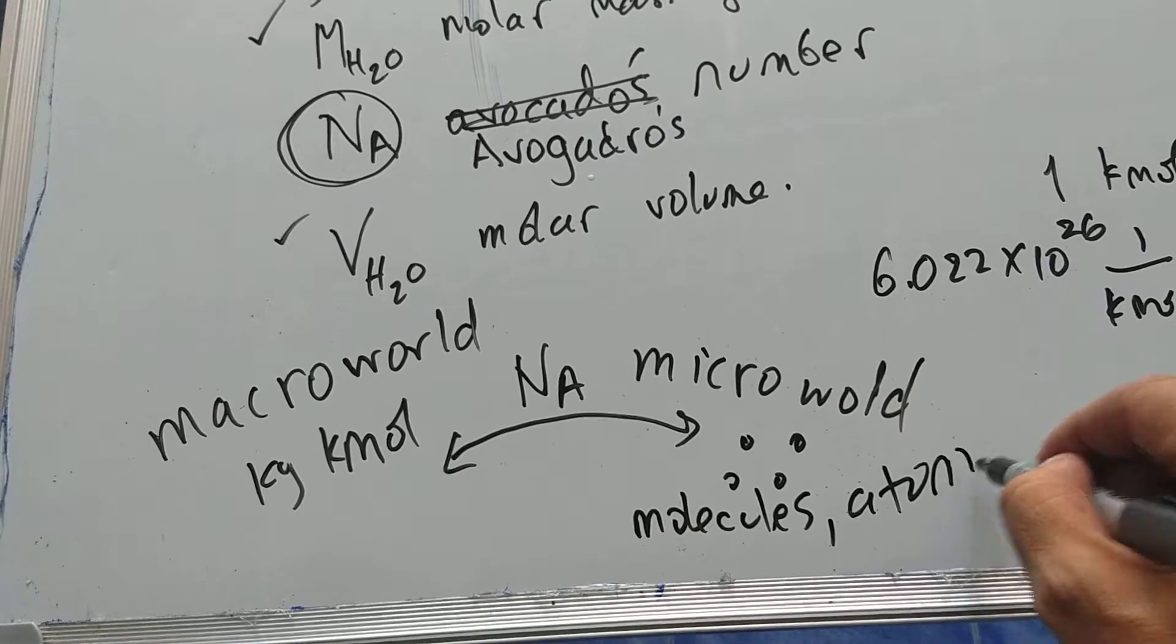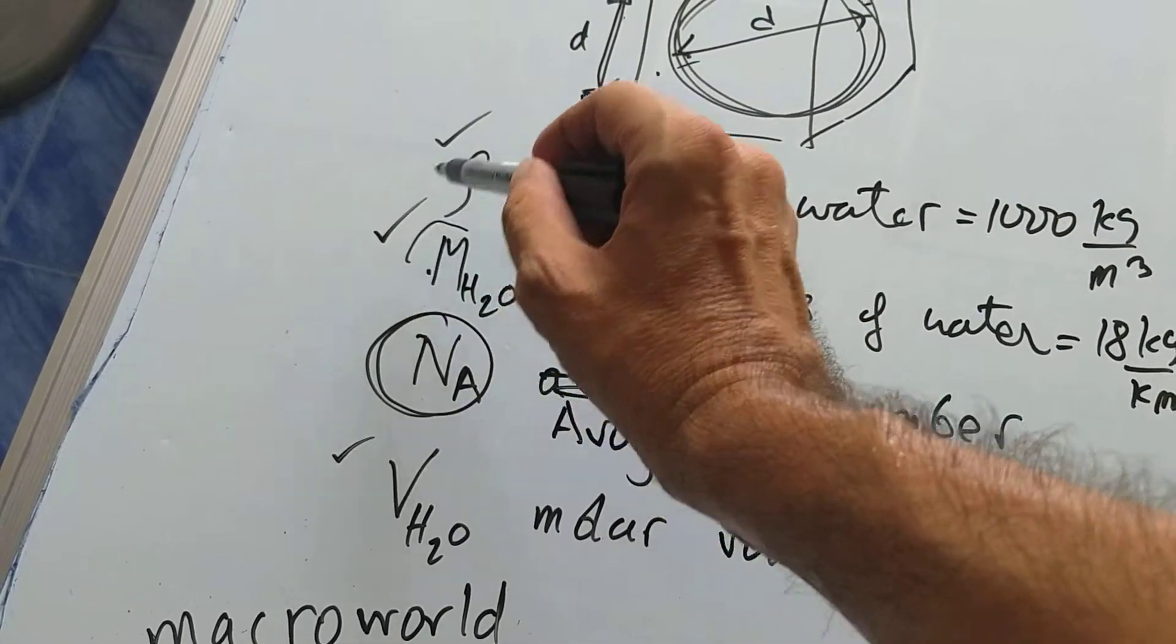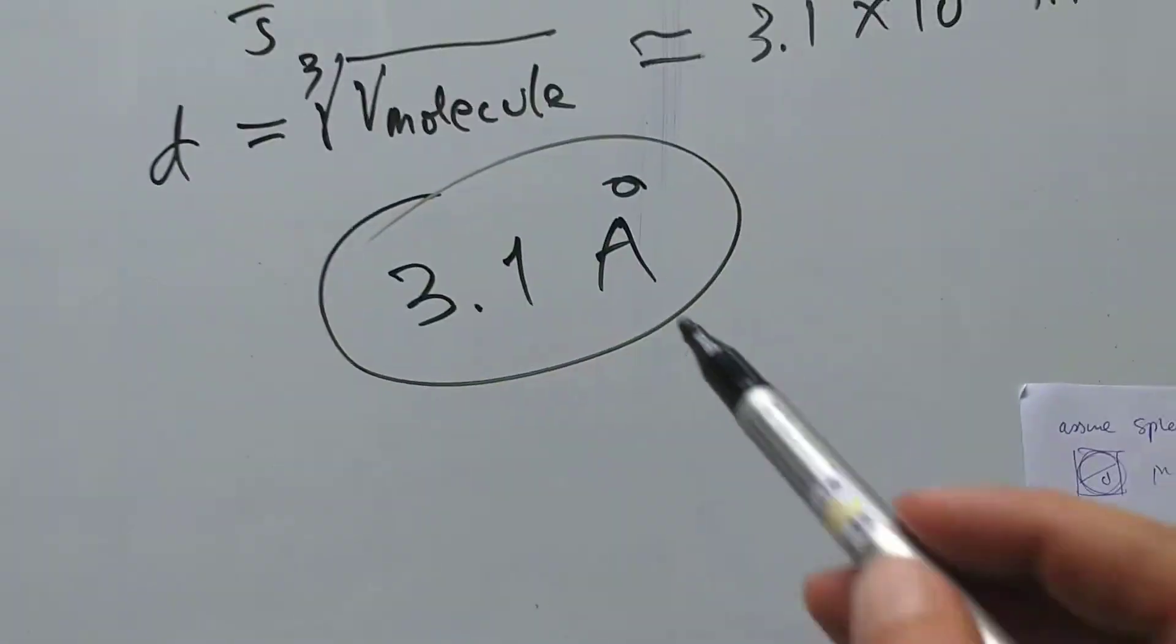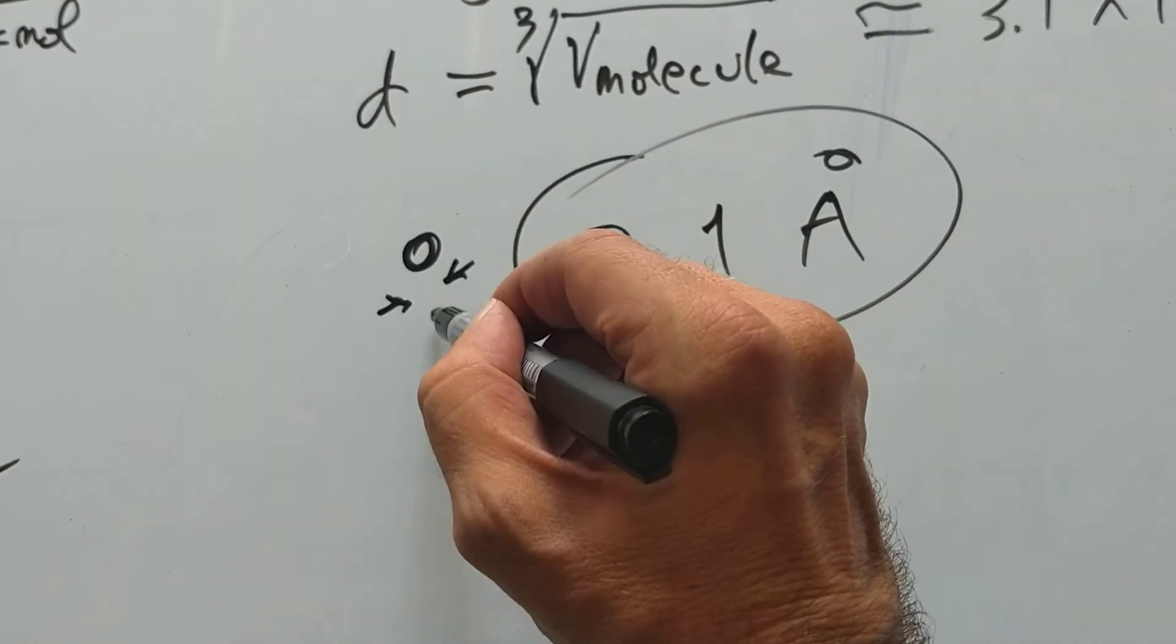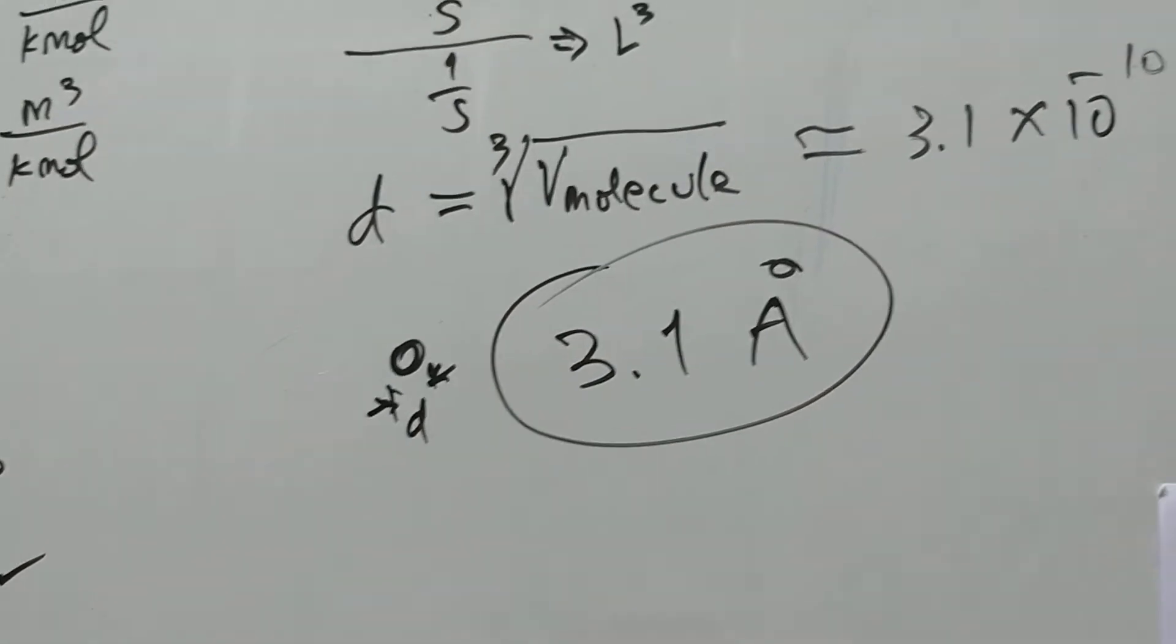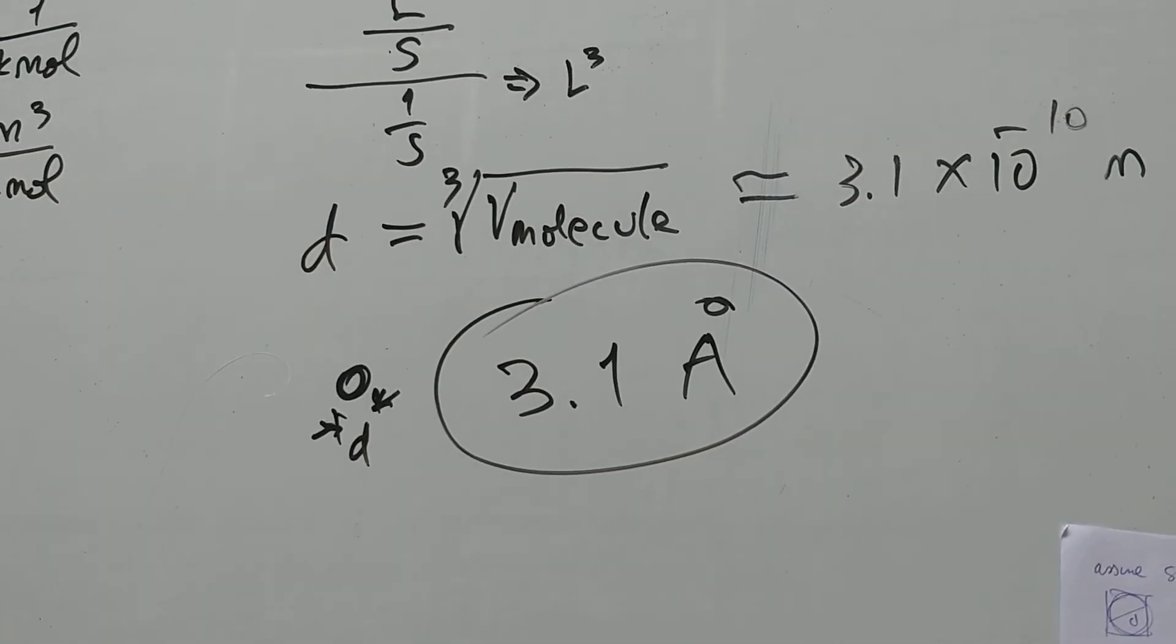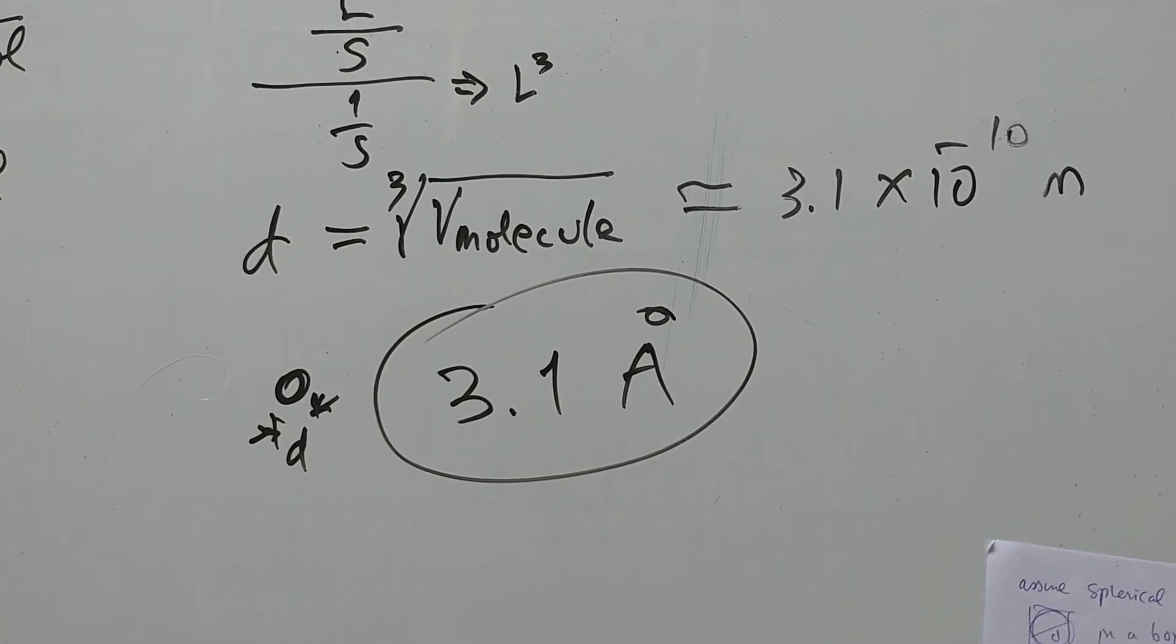We are able to take these macro quantities, this and this, and figure out a micro quantity, diameter of one water molecule. Amazing. A classic problem. I think we're probably not far from the true value. You can try looking up the true value and it's probably very close.